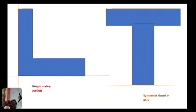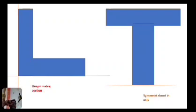Next one is an L-section — it is an unsymmetrical section. Next is a T-section. The T-section is symmetric about the vertical axis; therefore, the centroid of the T-section lies on the symmetric axis, on the y-y axis only.